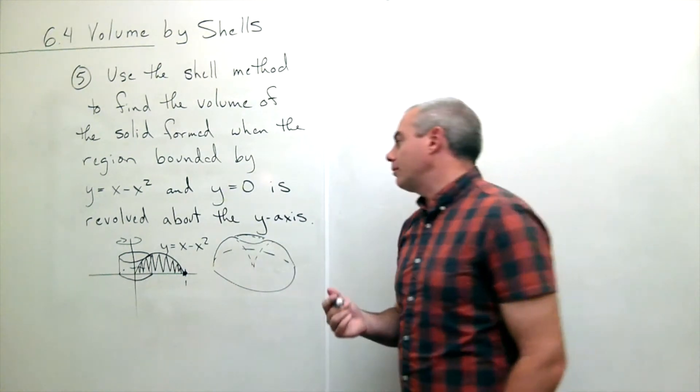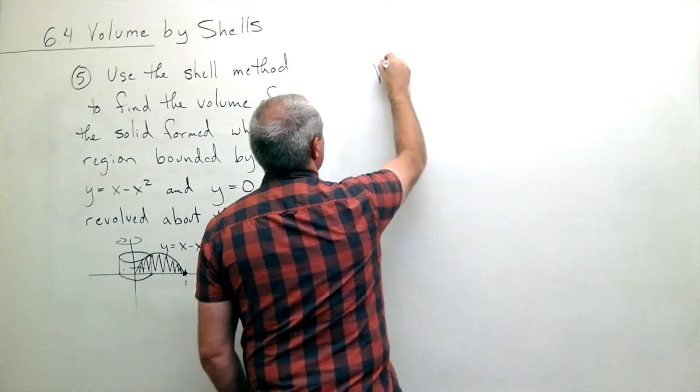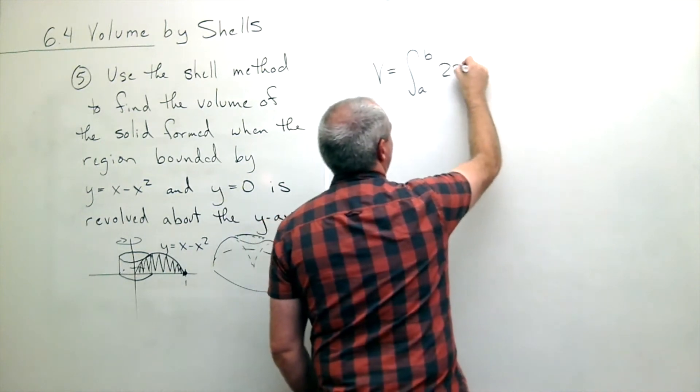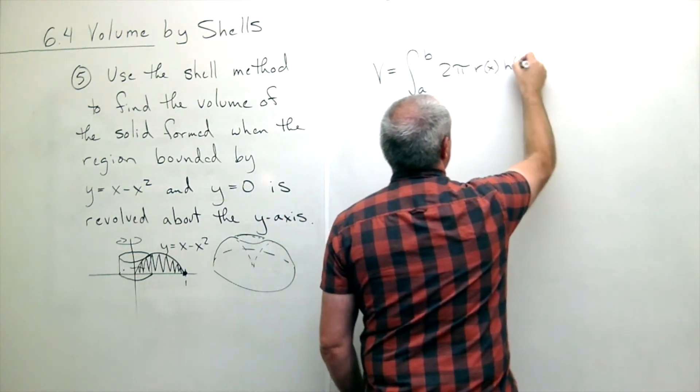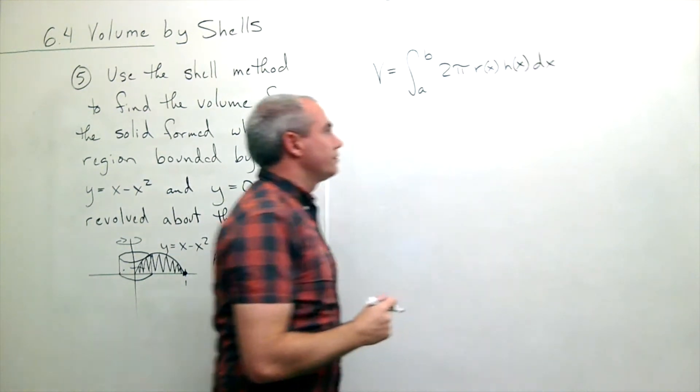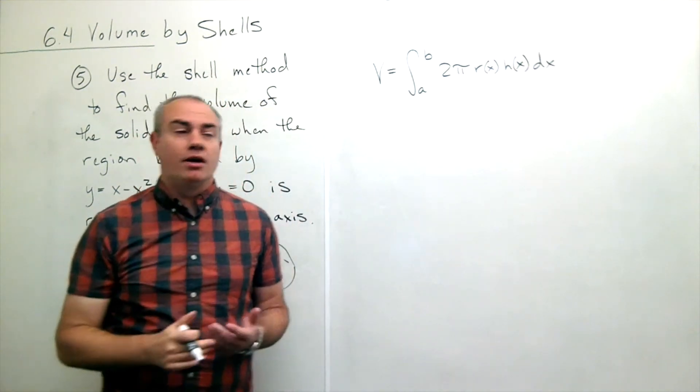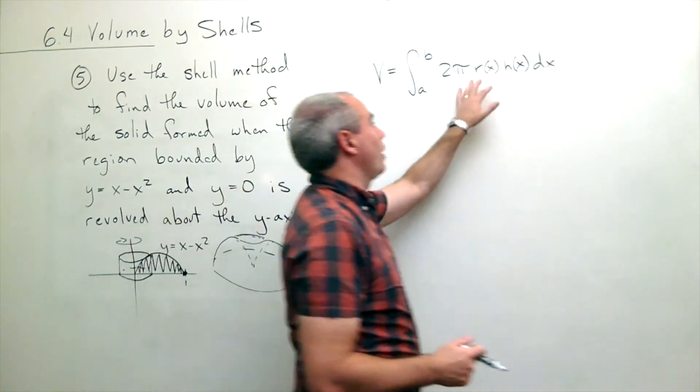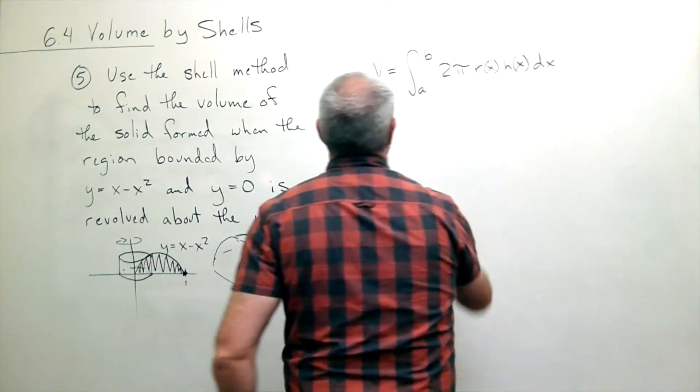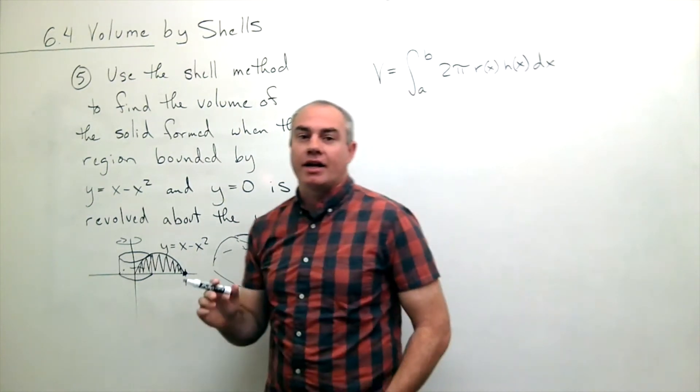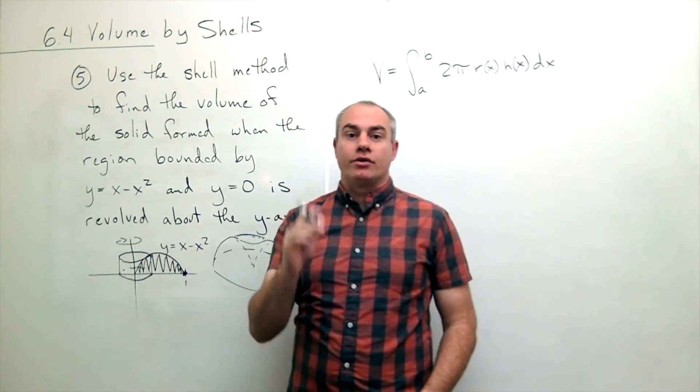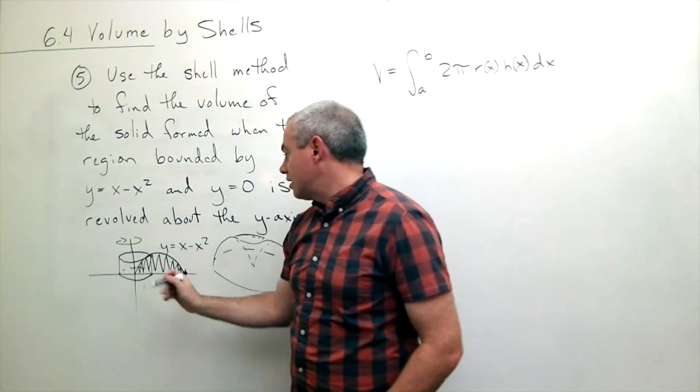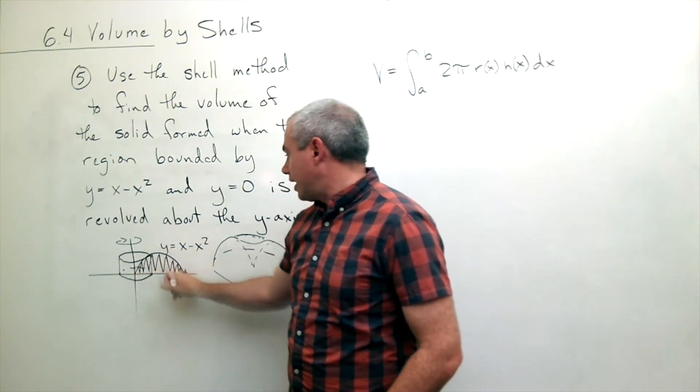So the formula that we'll be using is that volume is the integral from a to b of 2 pi r h dx. Okay, so this is what we have to remember when we're using the shell method is 2 pi r h dx is what we integrate from a to b and again a to b is asking where do I start cutting these rectangles or these line segments that I spin to form these shells and I can see here I start cutting and I stop cutting.